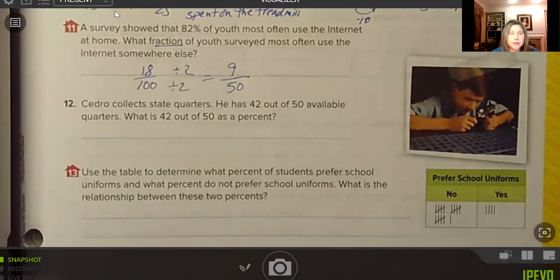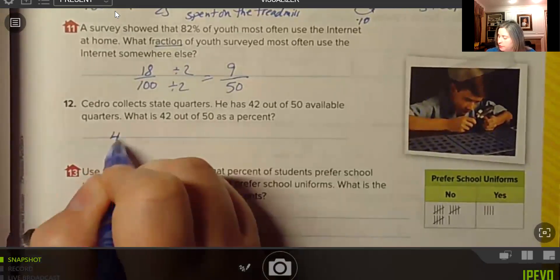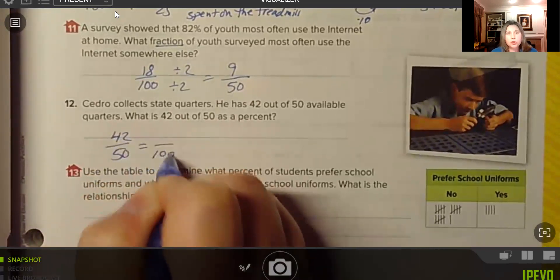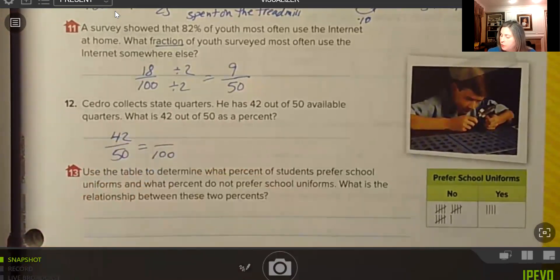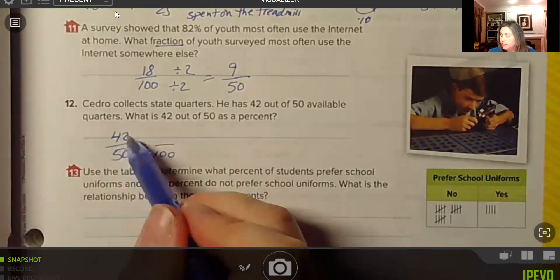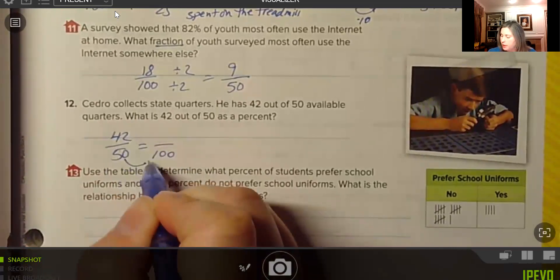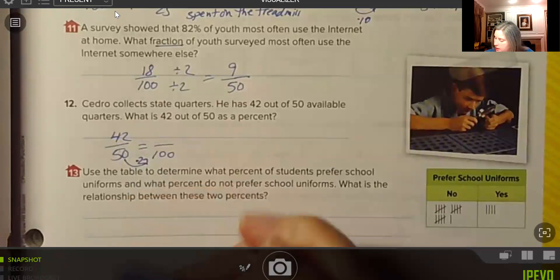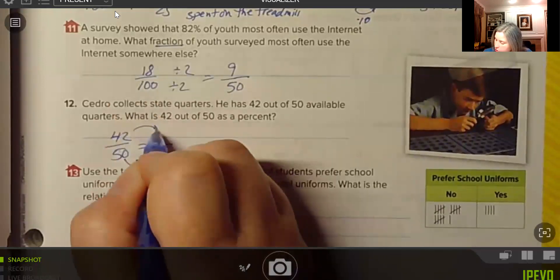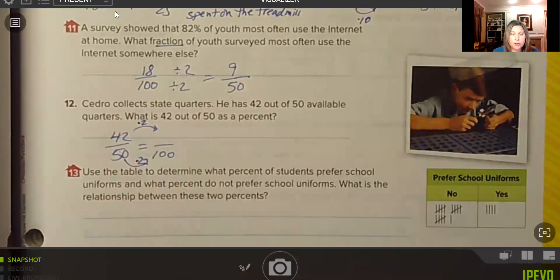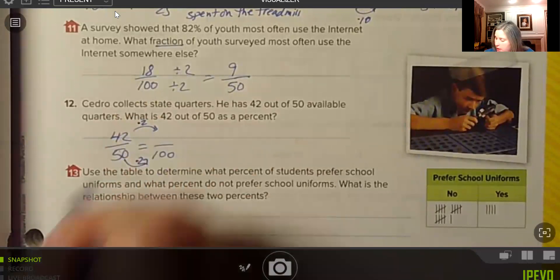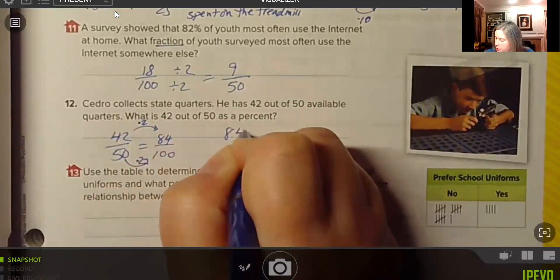Number 12, Cedro collects state quarters. He has 42 out of 50 available quarters. What is 42 out of 50 as a percent? So 42 out of 50, and we want to make that per 100. So if you look at our denominator, let's look at the proportion. 42 is to 50 as what is to 100. So to get from 50 to 100, we need to multiply by 2. And then we would need to do the same thing in our numerator, multiply by 2. 42 times 2 is 84. So 84%.